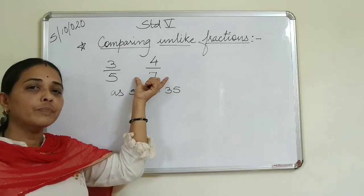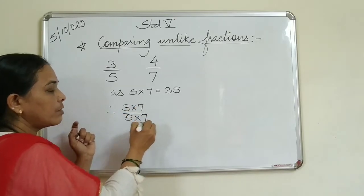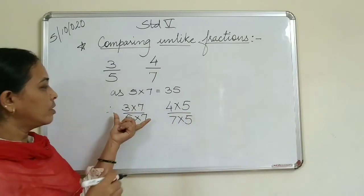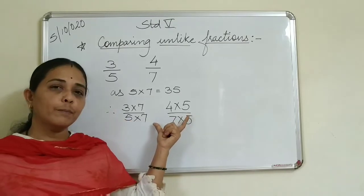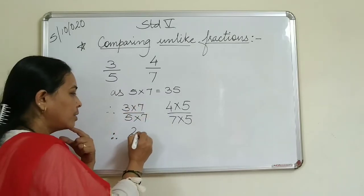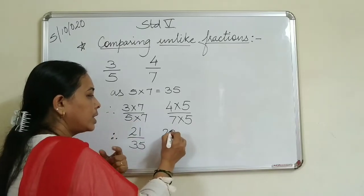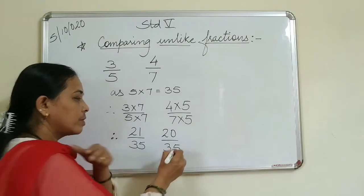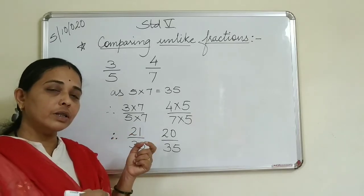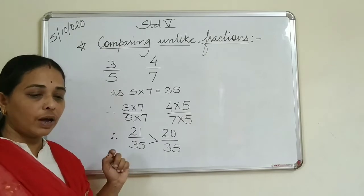Three into seven, and five into seven - and for the other fraction: four into five and seven into five. So for 3 upon 5 multiplied by 7: three sevens are twenty-one, five sevens are thirty-five. For 4 upon 7 multiplied by 5: four fives are twenty, seven fives are thirty-five. Now according to our rule, the bigger numerator means that fraction is bigger.